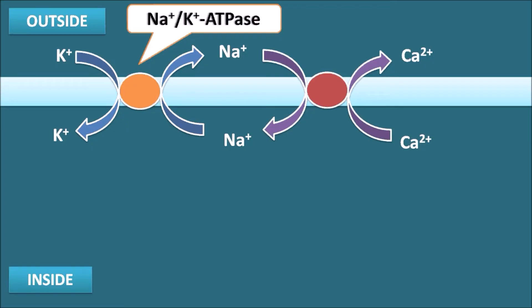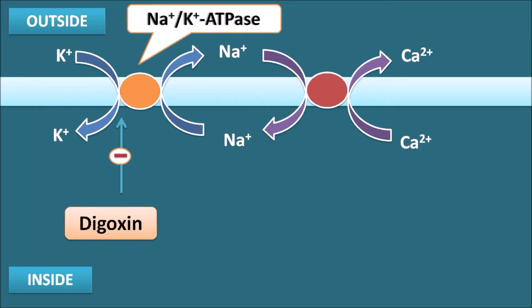Digoxin shows its action on the sodium-potassium ATPase pump. Digoxin binds to the potassium-binding site on the sodium-potassium ATPase pump and inhibits its activity. Digoxin competitively inhibits this pump by competing with potassium. Because of this inhibition, intracellular sodium levels increase — sodium accumulates because the pump is no longer working.